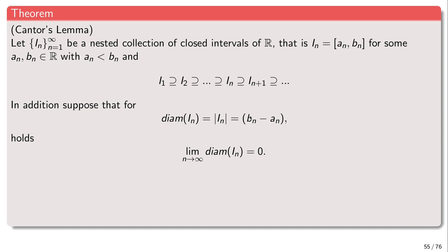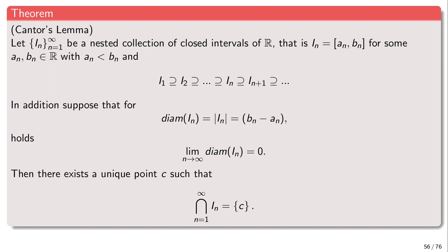We assume the diameter tends to zero, so the lengths of the intervals tend to zero — the intervals shrink. What do we expect? Since this is a nested sequence, the intervals will eventually have exactly one point in common. They will intersect at exactly one point.